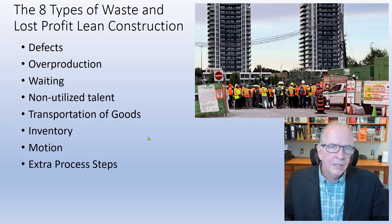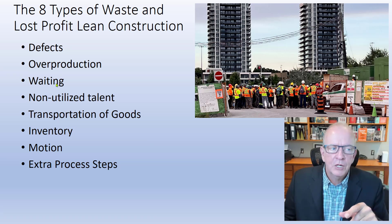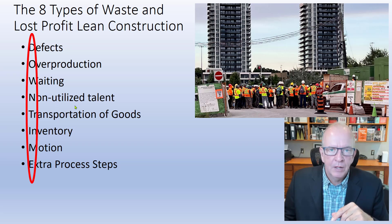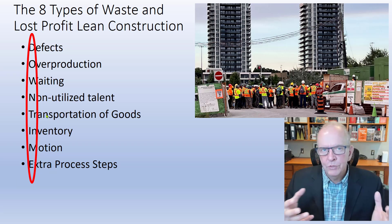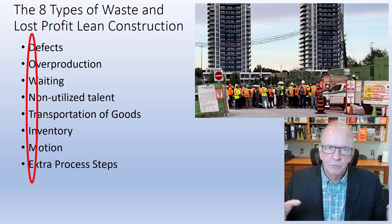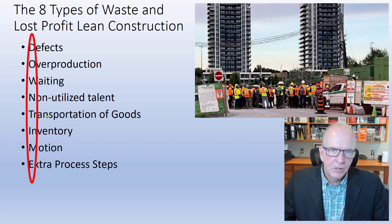So we're looking at the eight areas of waste. In previous videos we've looked at defects, overproduction, and waiting. Today we're looking at non-utilized talent. This is part of lean construction, pulled out of lean manufacturing methodologies, and it spells the word DOWNTIME — that's the easy way to remember these eight areas of waste.